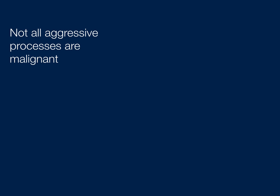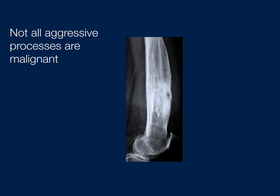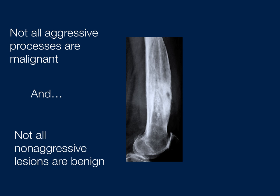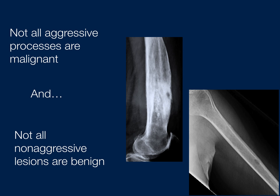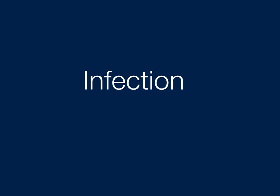The reason we want to do this is because not all aggressive processes are malignant — for example, an infection can look very aggressive. And not all non-aggressive appearing lesions are benign; a well-defined lesion can represent multiple myeloma. Infection gets its own slide because you always want to consider infection in any bone lesion.